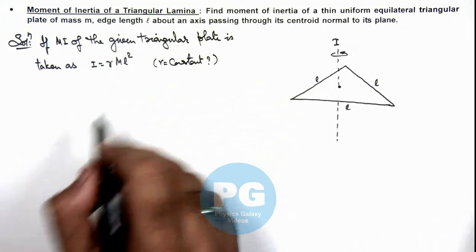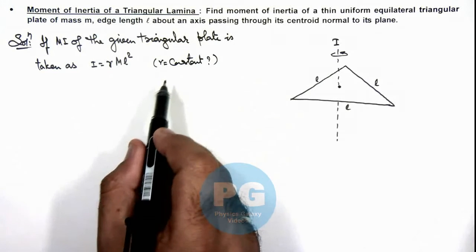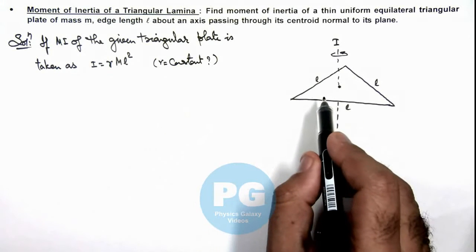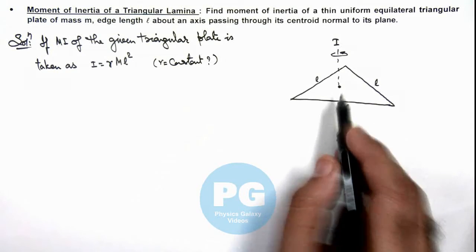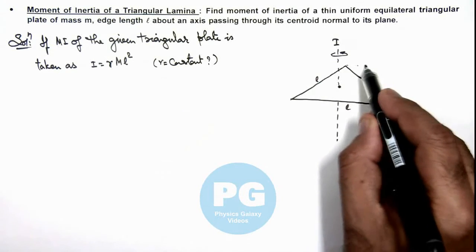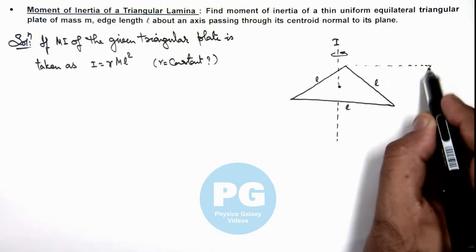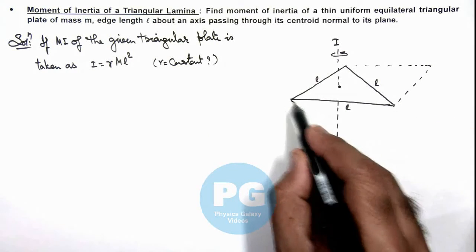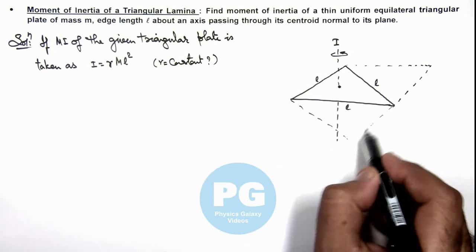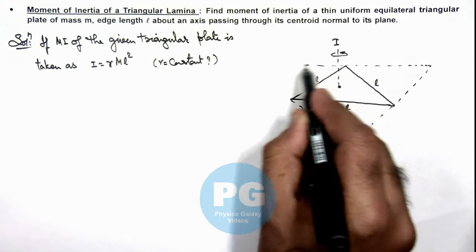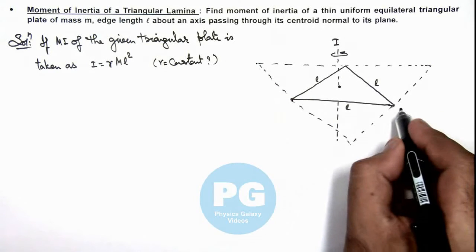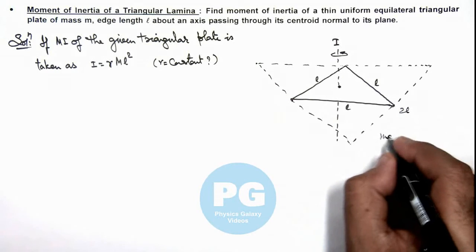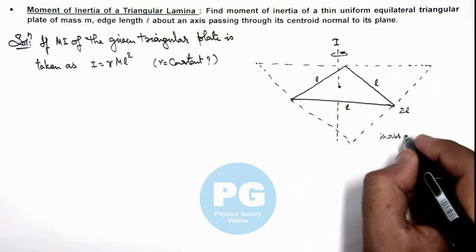Now in this situation, to analyze it, one way is we consider an element and integrate. Another way is I can visualize if I consider an identical triangular plate at all three edges of this lamina. Then we can see a big triangular plate is formed which is of length 2l, and its mass will be due to four plates, this will be 4m.